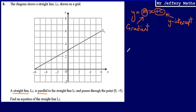So for line L2, I know that this is going to be y equals something x, and that something is the gradient, which is simply going to be the same as line L1. To work out the gradient, I need to work out what the change in y is as x increases by 1. So if I move across one space on the x-axis, what change in y does that bring about? When I move across by 1 on the x-axis, that causes a change in y of a half.